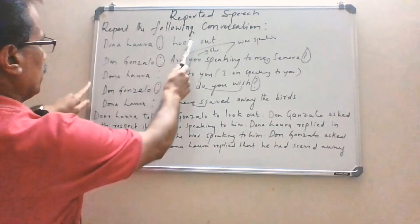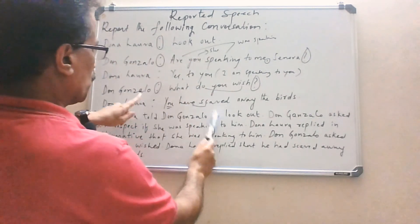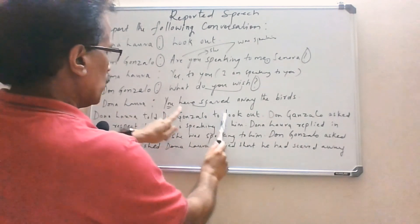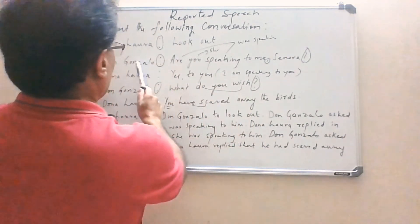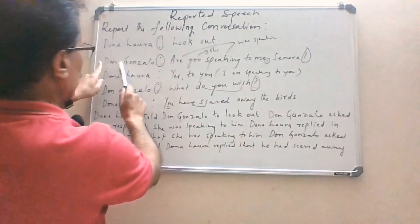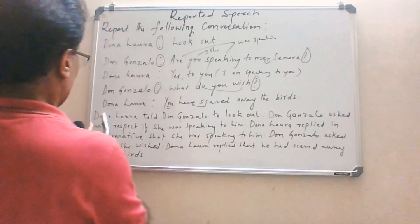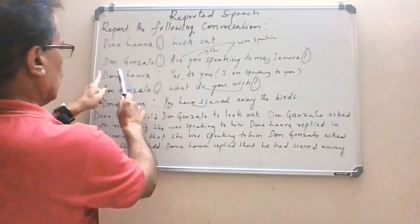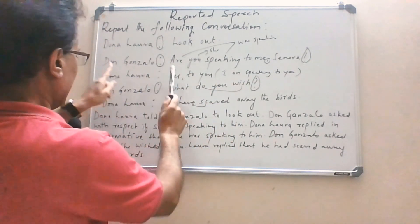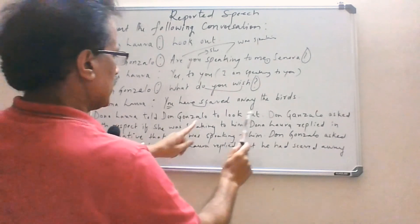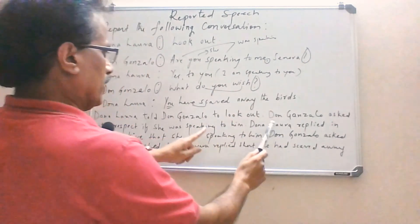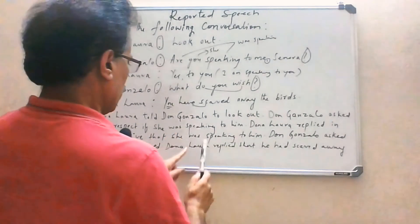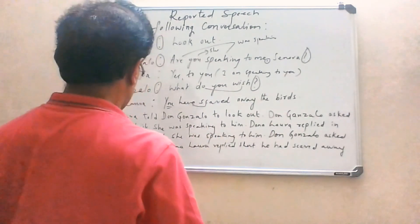I repeat the answer. First one is an imperative, so 'to look out': Donna Laura told Don Gonzalo to look out. Second one is a yes/no form of question: Don Gonzalo asked with respect if she was speaking to him. Third: Donna Laura replied in affirmative that she was speaking to him. Don Gonzalo asked what she wished. Donna Laura replied that he had scared away the birds.